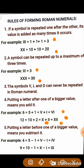Rule number 5 says: putting a letter before one of bigger value means you subtract it. For example, 4 cannot be written as IIII because a symbol can be repeated only up to 3 times. That is why 4 is expressed as 5 minus 1. Since 5 is represented by V and 1 is represented by I, and there is a minus sign, I is written before V — so 4 is written as IV. Similarly, 9 is written as 10 minus 1; since I is placed before X, 9 is written as IX.